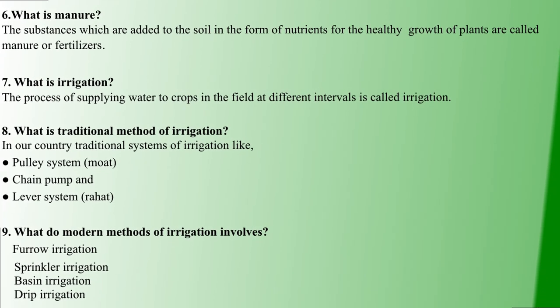Next question: What is Manuring? Manuring is adding additional nutrients to the soil so that plants are healthy. These nutrients come from fertilizers. Fertilizers affect plant growth and lead to healthy growth, so we use manure.